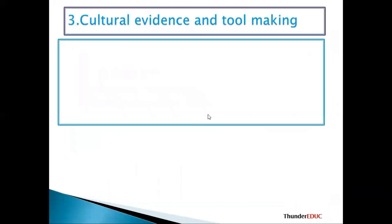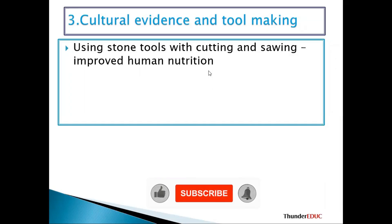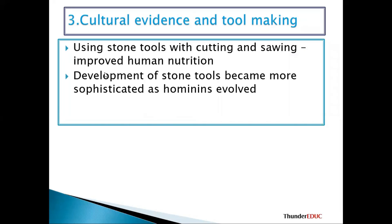Then we have cultural evidence — tool making. Using stone tools for cutting improved human nutrition. If you can cut the meat, you can kill the animal and obtain nutrients from it. Development of stone tools became more sophisticated as hominins evolved. As these hominins are evolving, the tools became more advanced — it's like a phone: in the year 2000 the phone was basic, but as you progress toward 2020 it becomes more sophisticated.